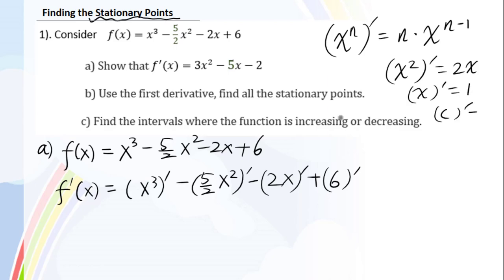Constant number prime equals 0. So we have 3x squared minus 5 over 2 times 2x minus 2. You don't have to write down times 1, then plus 0. Simplify: 3x squared minus 5x minus 2.